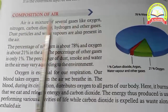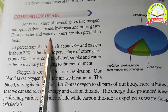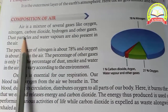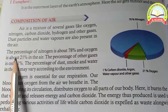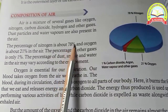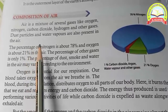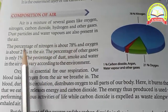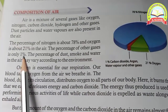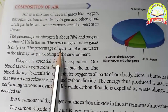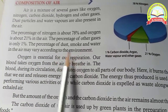Air is a mixture of several gases like oxygen, nitrogen, carbon dioxide, hydrogen and other gases. Dust particles and water vapors are also present in air. The percentage of nitrogen is about 78%, oxygen is about 21%, and the percentage of other gases is only 1%. The percentage of dust, smoke and water vapor in air may vary according to the environment.